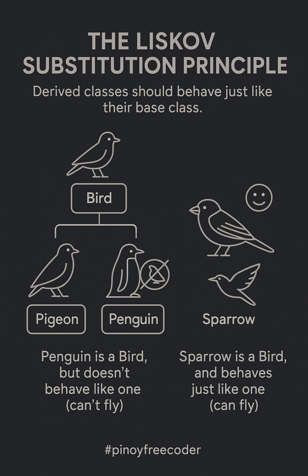Imagine you're in a family of animals. The bird family can all do something special — they can fly. Now, imagine if a bird like a penguin comes along. Normally, we expect all birds to be able to fly, but penguins can't fly. In this example, we've broken the Liskov Substitution Principle. Penguins are supposed to be a type of bird, but they don't behave like other birds — they can't fly. This makes it hard for us to treat them as a regular bird.